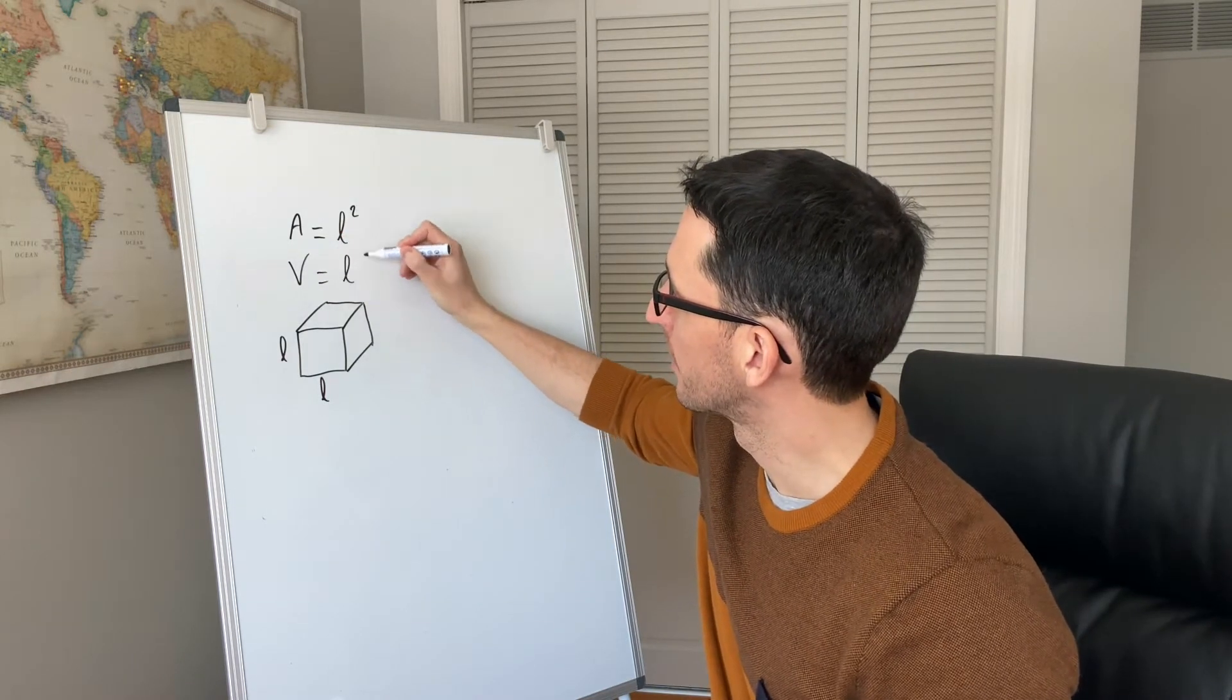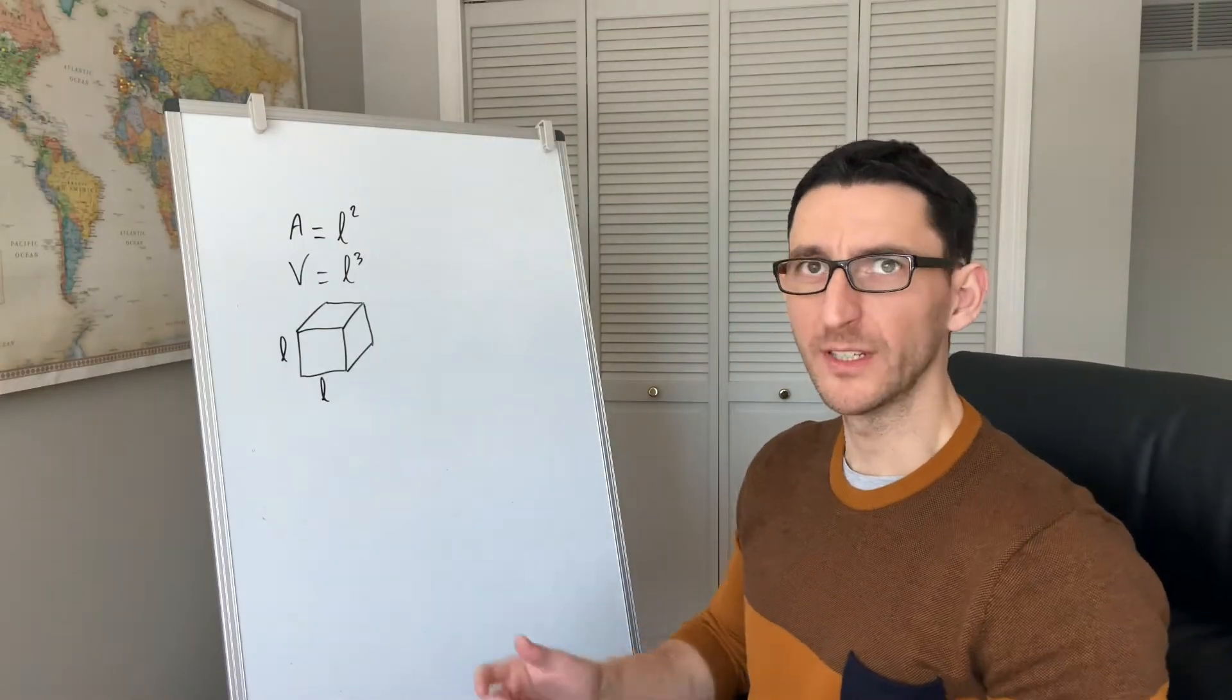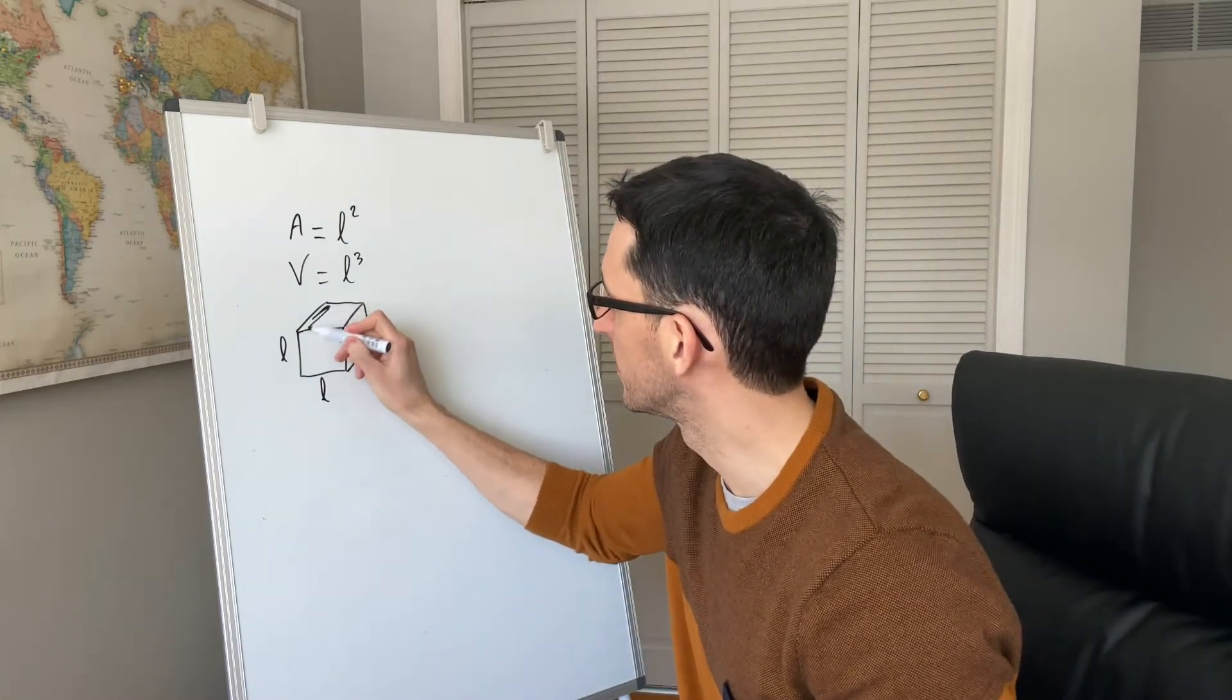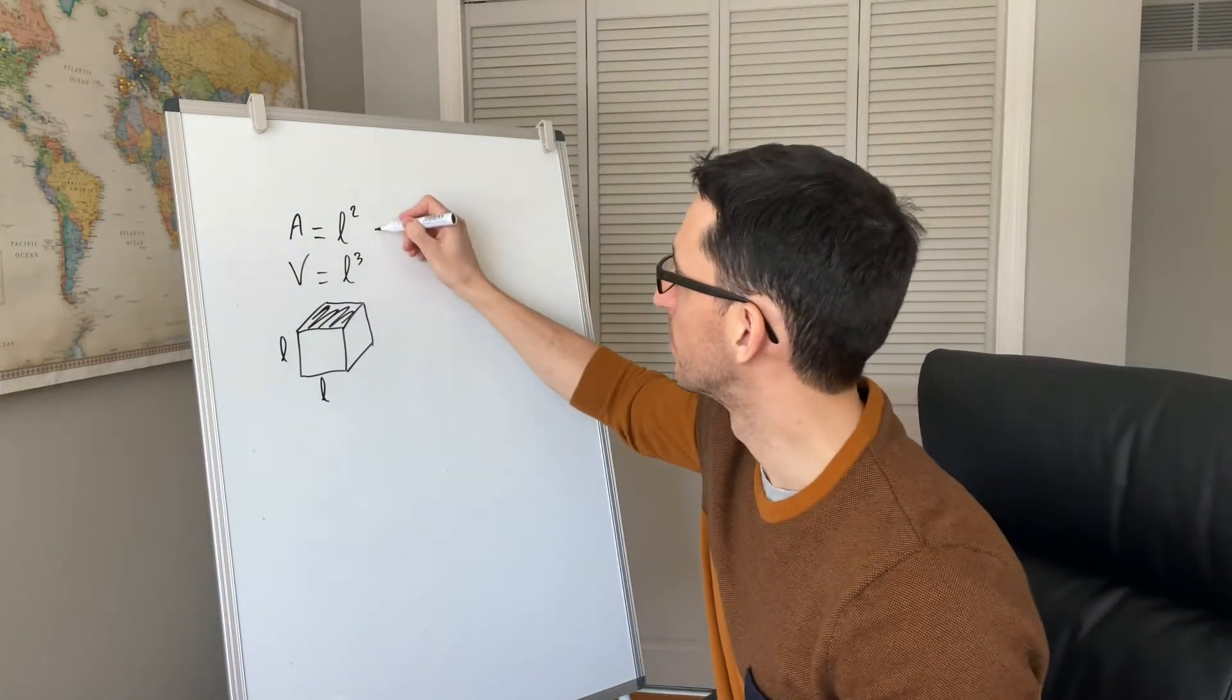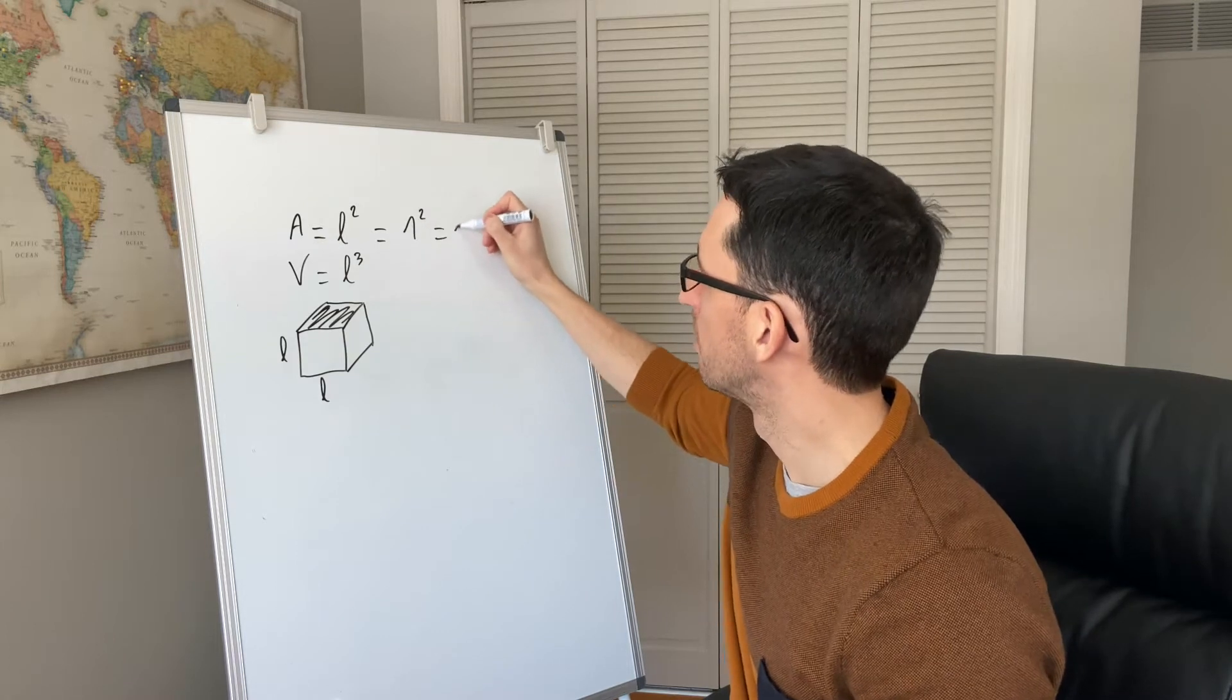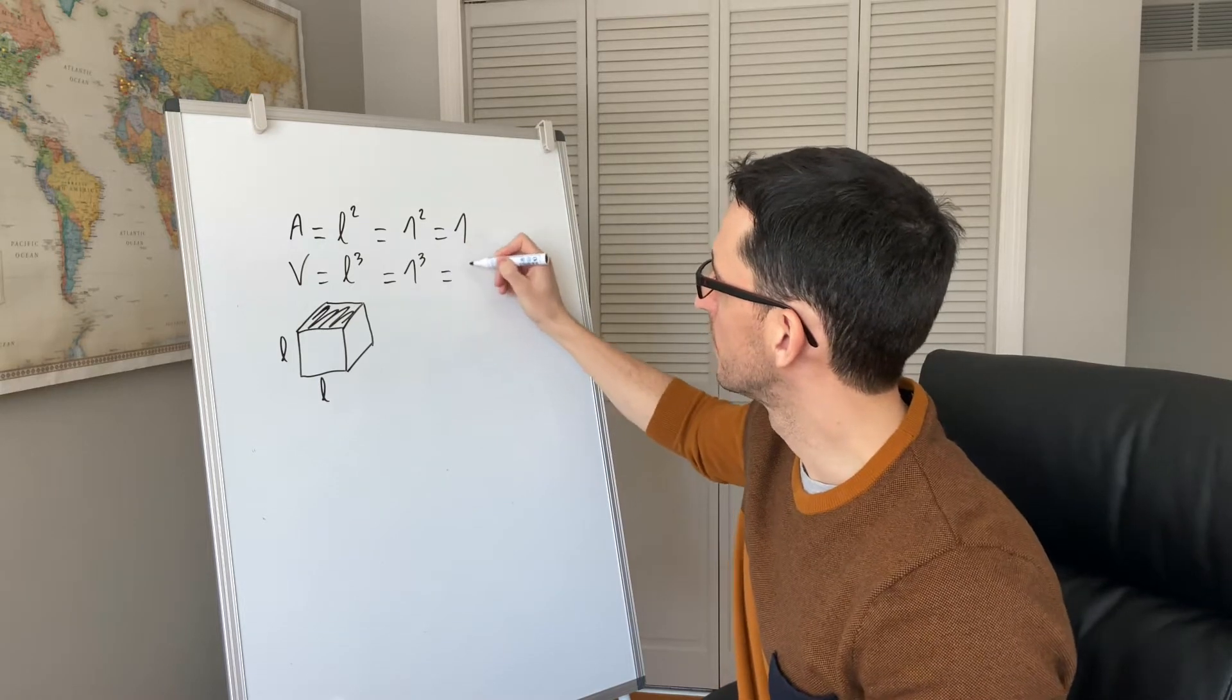So, in this example, we can easily calculate the cross-sectional area and the volume of the cube. It is equal to 1 squared, or 1, and it's equal to 1 to the power of 3, which is also 1.